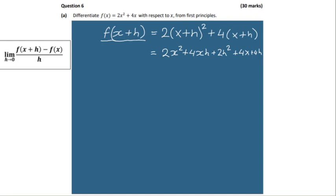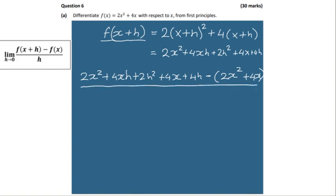Let's write the formula all together and solve the limit as h goes to 0. This will give us our rate of change off the graph. So f(x + h) would be 2x² + 4xh + 2h² + 4x + 4h, and then we subtract f(x) — the original function 2x² + 4x — all over h, as the limit as h goes to 0. Now we look across and find our cancellations: 2x² and −2x² cancel, and +4x and −4x cancel.